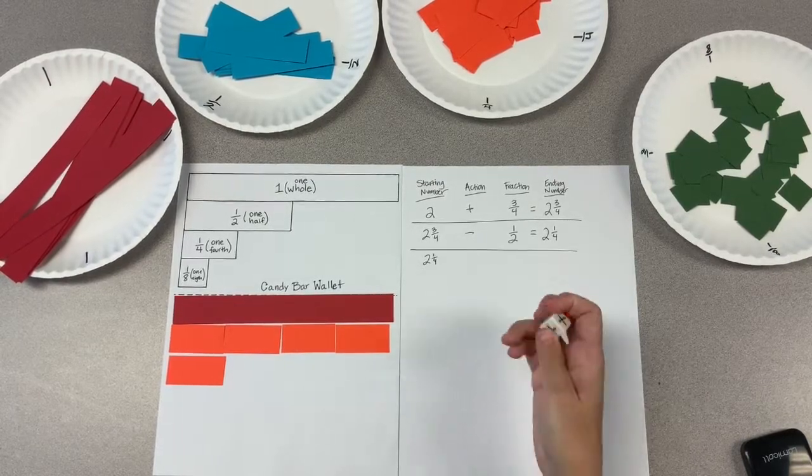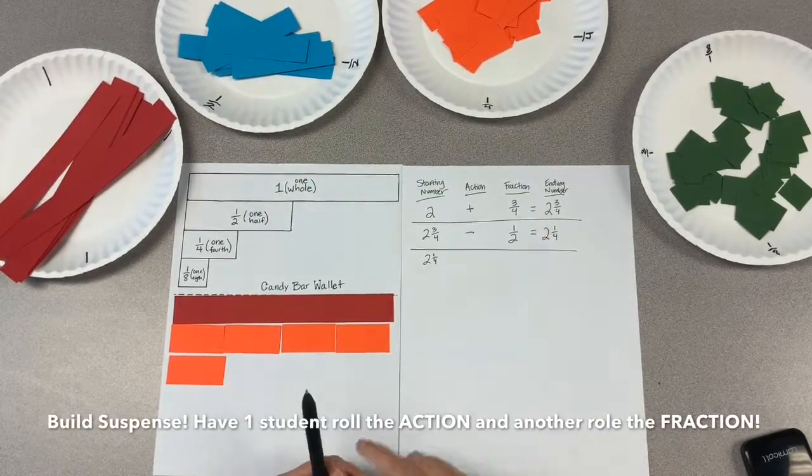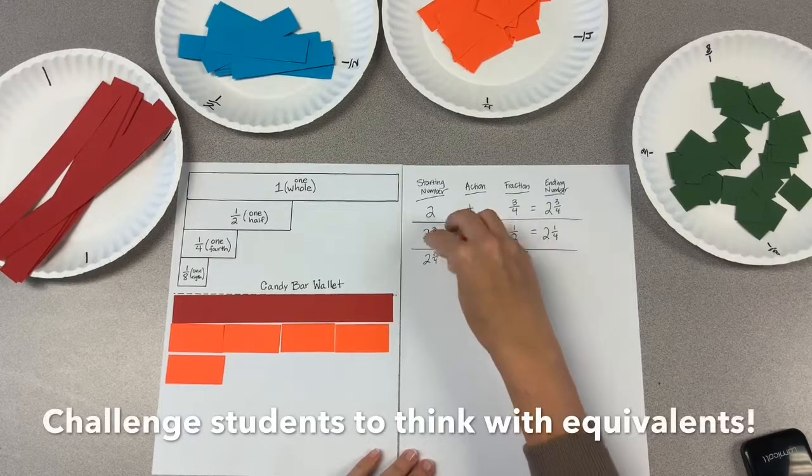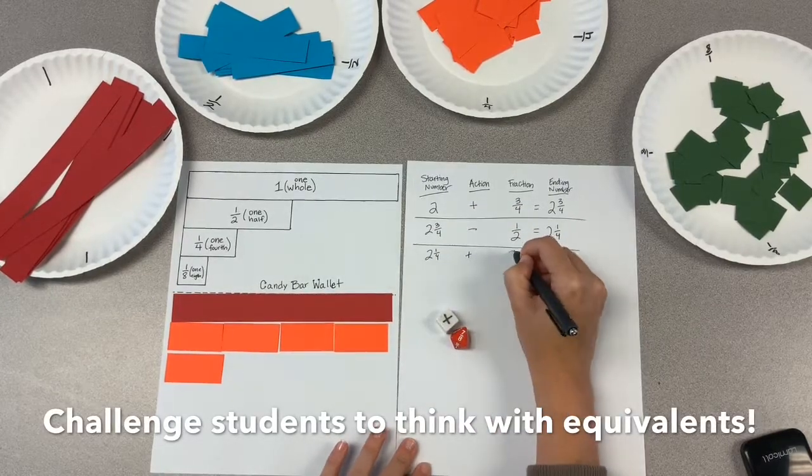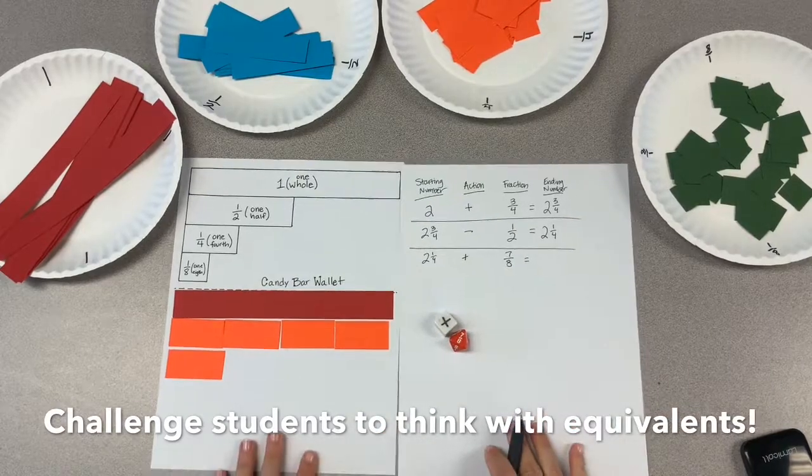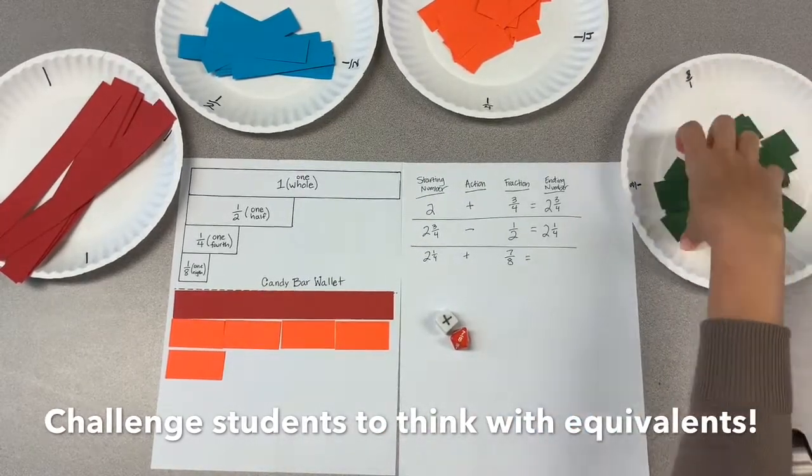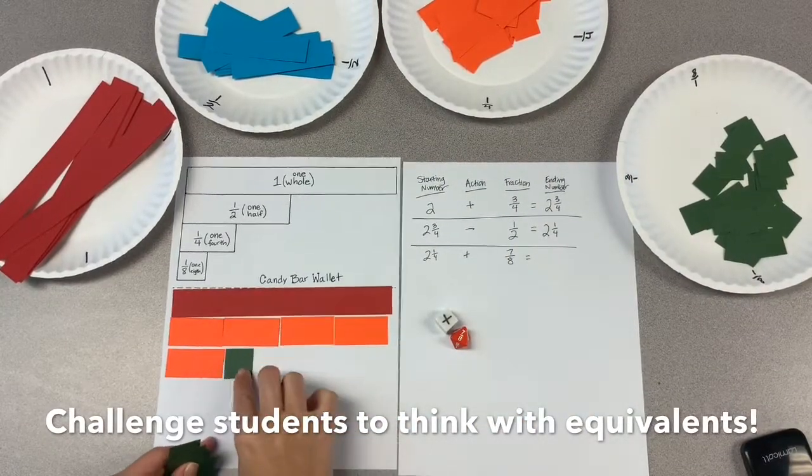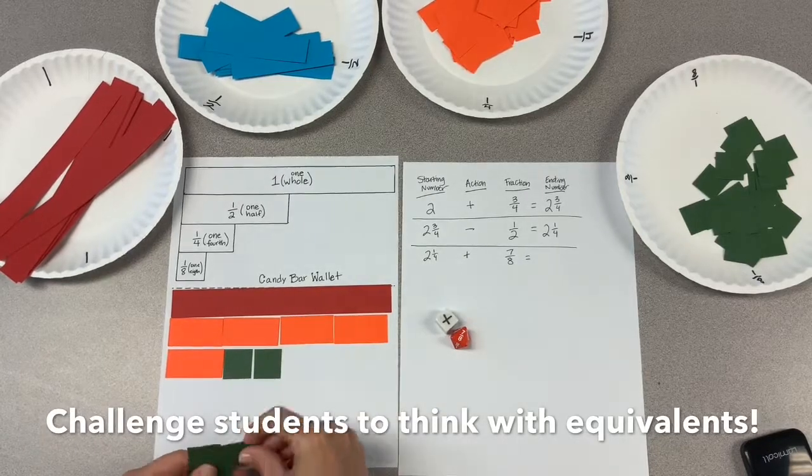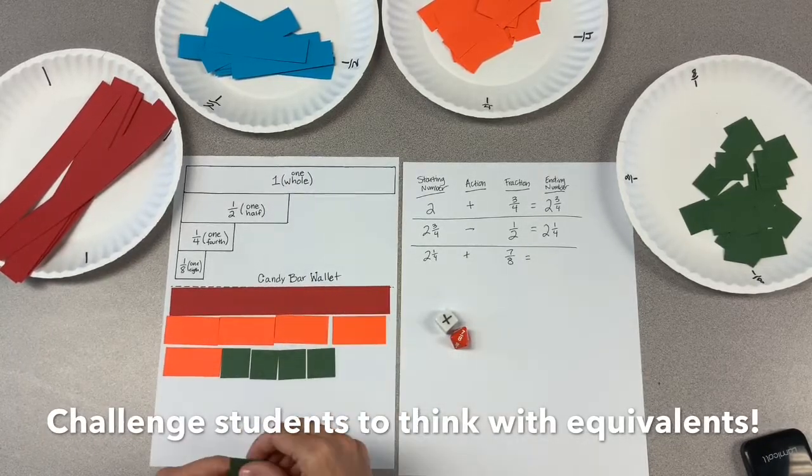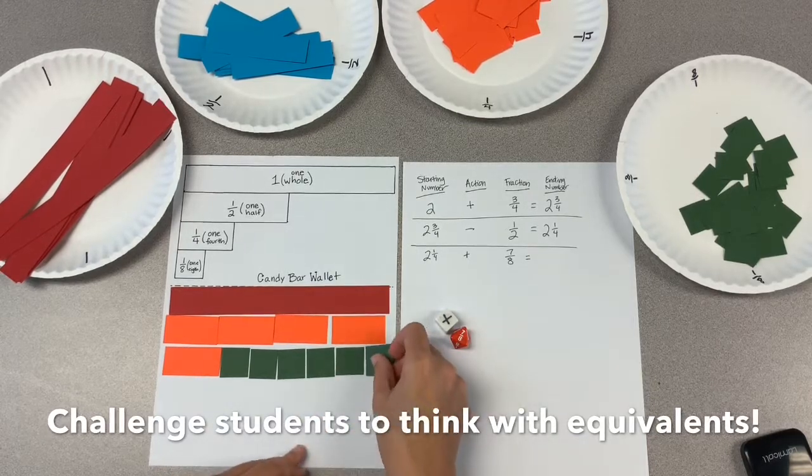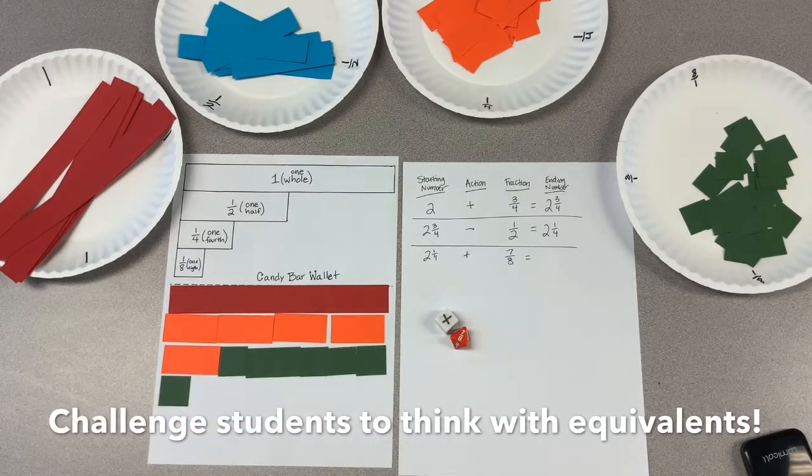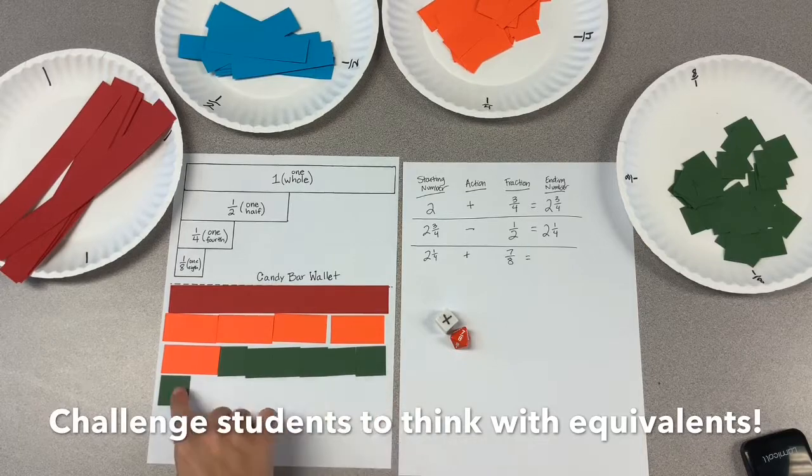Two and one fourth plus seven eighths. Right now, I would have students possibly start with counting out seven eighths. Again, we're going in order. One, two, three, four, five, six. It looks like that makes a whole. Seven eighths. Visually, I can see this is three and one eighth.